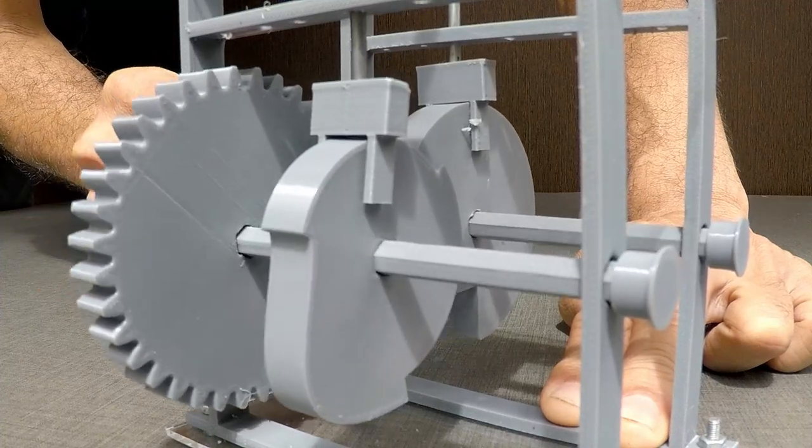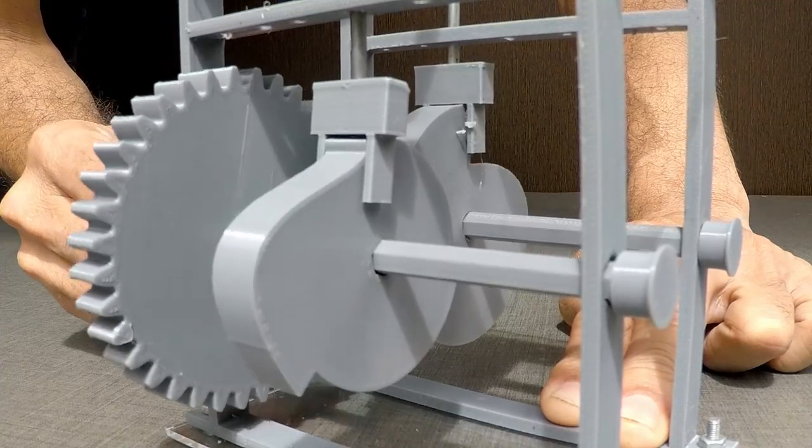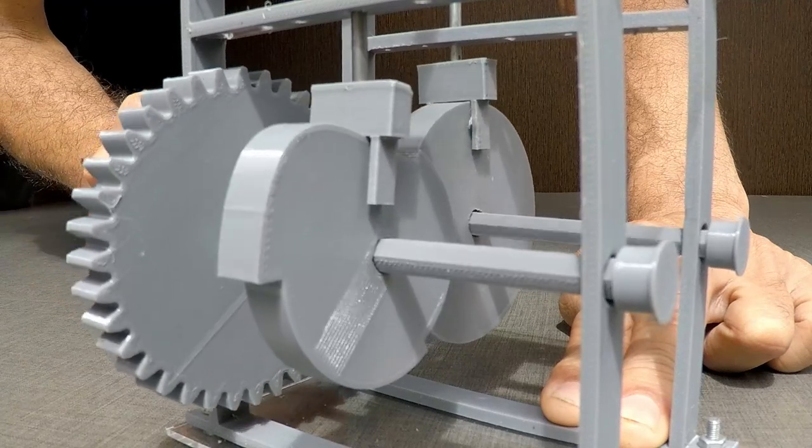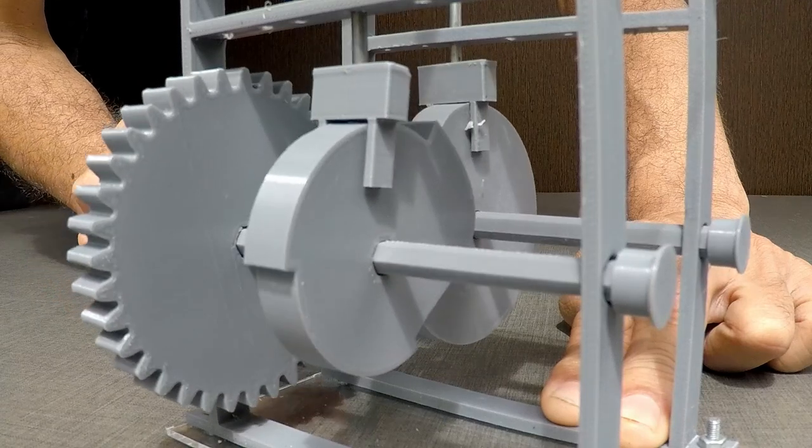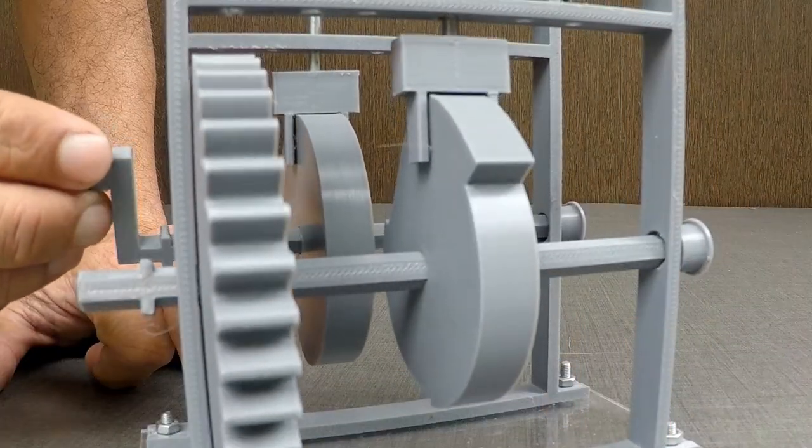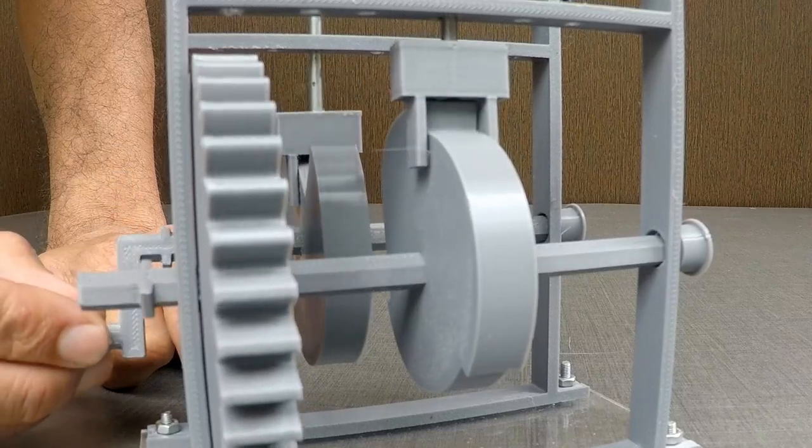Step of the nail follower comes immediately after that of the hand follower. Distance with which drop happens every time reduces. This is to indicate that it takes more force to push the nail after initial hit.